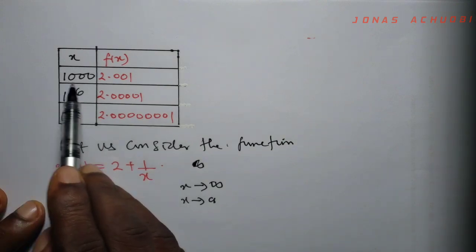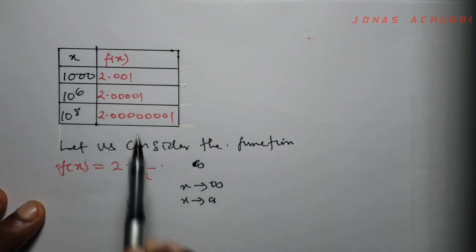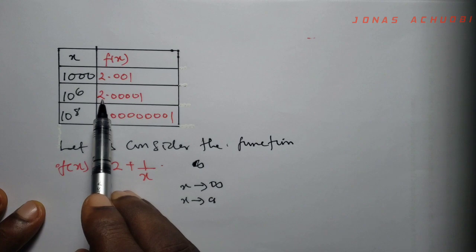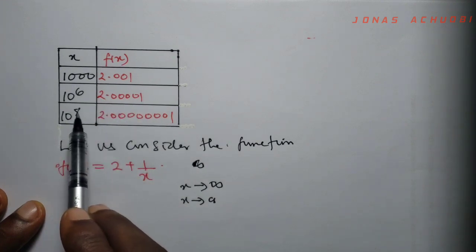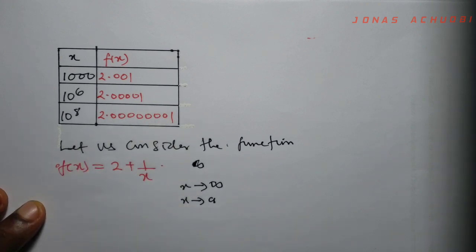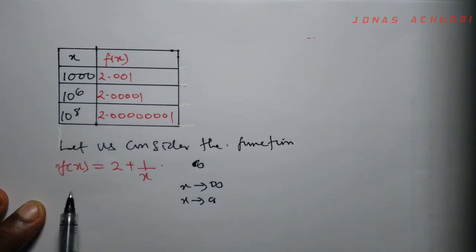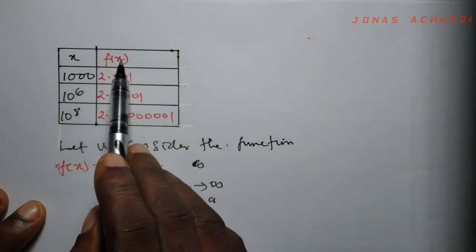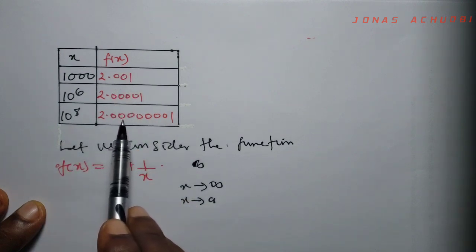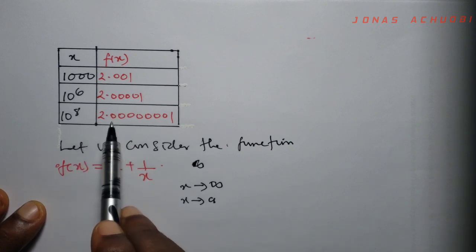Back to this function. When x is 1000, plugging into 2 plus 1 over x gives 2.001. When you plug in 10 to the power 6, which is a million, you get 2.000001. And when you plug in 10 to the power 8, you get 2.0000001. We observe that as the value of x keeps increasing towards infinity, the functional values go towards 2.0. If you take the next point, say 10 to the power 40, it will go even closer to 2.